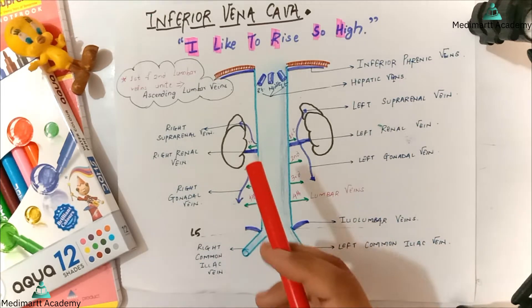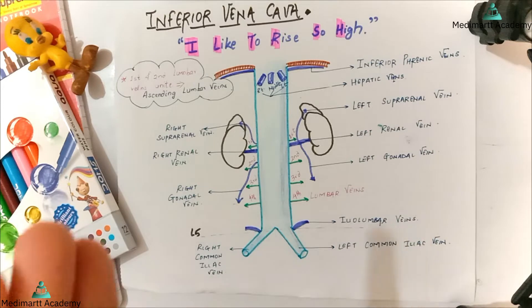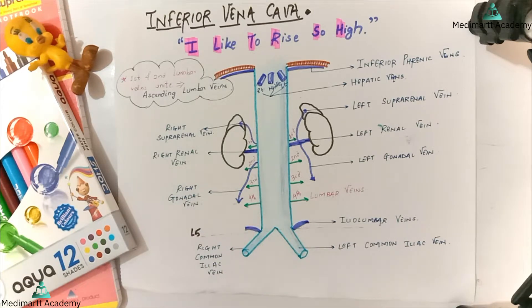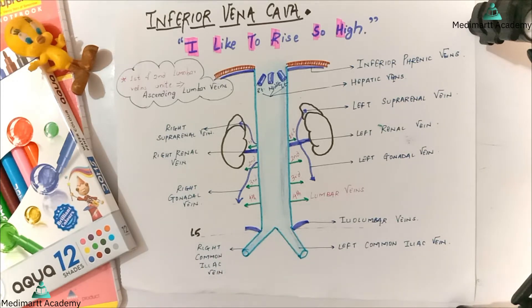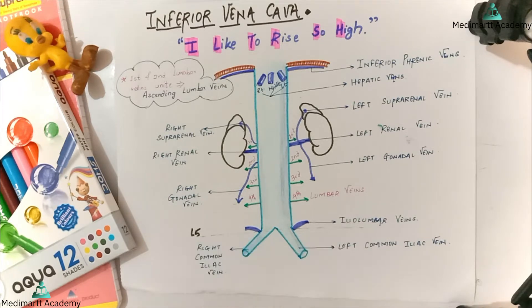The inferior vena cava lies on the right side of the median plane of your body, while the abdominal aorta lies on the left side of the median plane. Both the inferior vena cava and abdominal aorta lie in the posterior abdominal wall. The abdominal aorta is the continuation of the descending thoracic aorta, going from above downwards, while the inferior vena cava goes from down to up, draining into the right atrium of the heart, which receives both the superior and inferior vena cava.